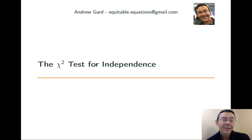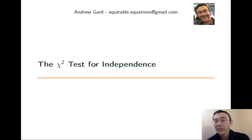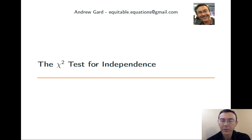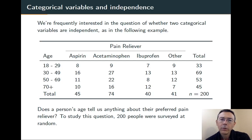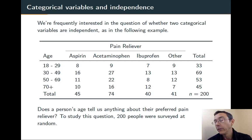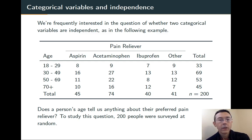Hey everybody. Today we're going to use the chi-square distribution to test for independence between a couple of categorical variables. Here we're basically looking at two-way tables, or contingency tables as they're sometimes called.